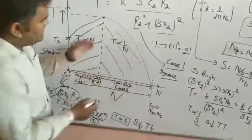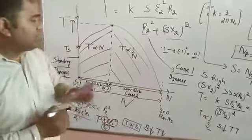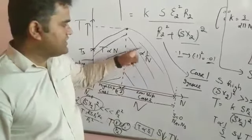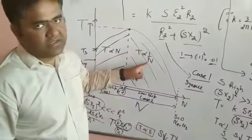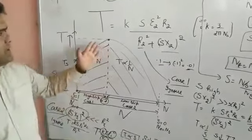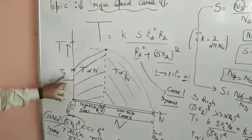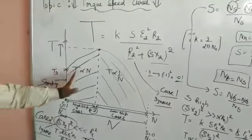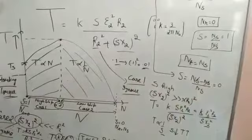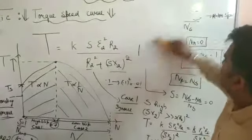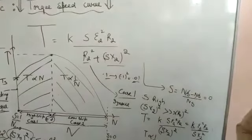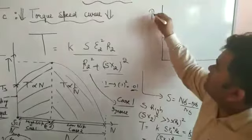In this second portion of the curve, the torque is reduced as speed increases — that is, as slip decreases. This means that torque is inversely proportional to slip in this region. So this was the torque-slip and torque-speed curve behavior explained through two cases.